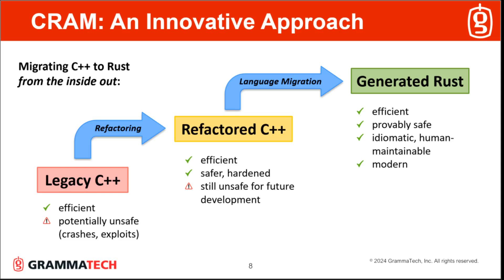Here's an overview of how CRAM works. The migration from legacy C++ to Rust proceeds in two stages. CRAM first refactors the C++ into a safer hardened version — the yellow box — by imposing some of the same memory access restrictions that Rust enforces, but all within the C++ code, so there's no Rust in this first stage. Then in the second stage, that safer C++ is migrated to Rust.